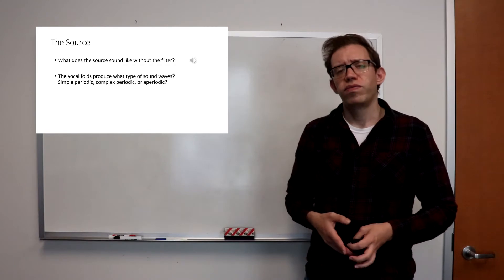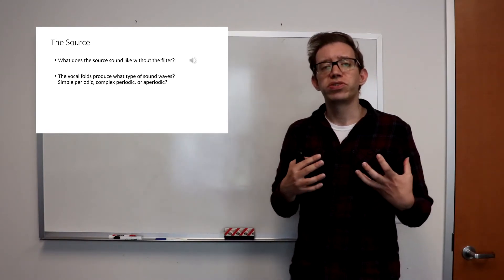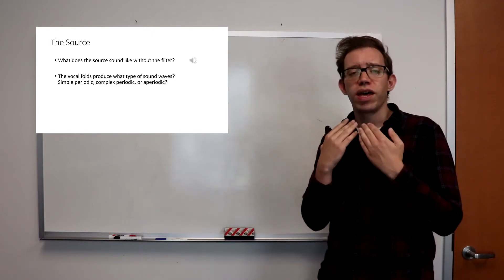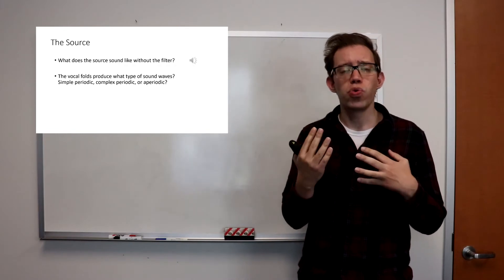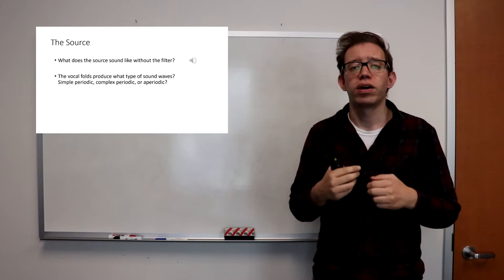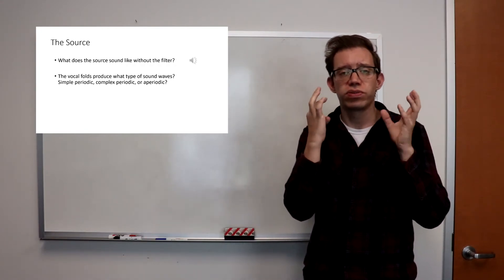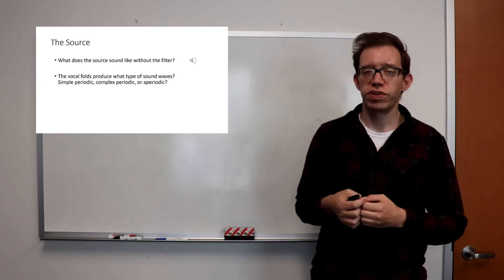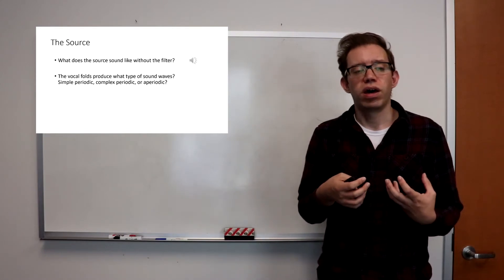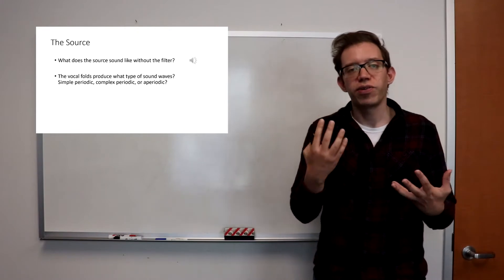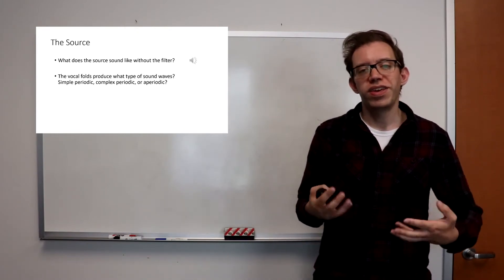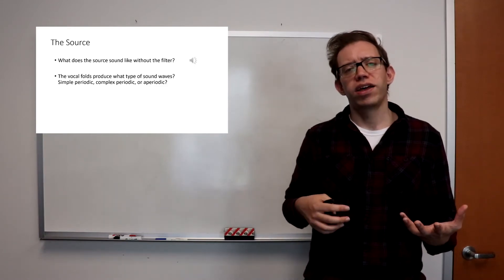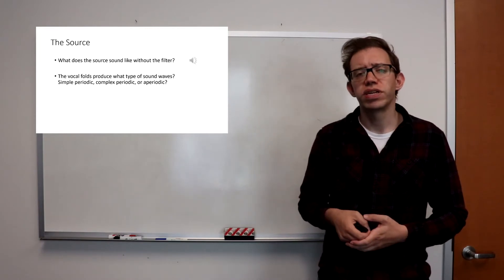You never actually get to hear the source without the filter, because we have heads attached to our necks. Any time you produce any vowels, the vocal folds produce vibrations in the throat, and they're always going to be filtered in some way by the vocal tract — by the ways you shape the tongue and mouth to produce different vowels. They've actually done some gory experiments — apparently they decapitated a cow and had its vocal folds vibrate, and it sounded as they would have predicted.